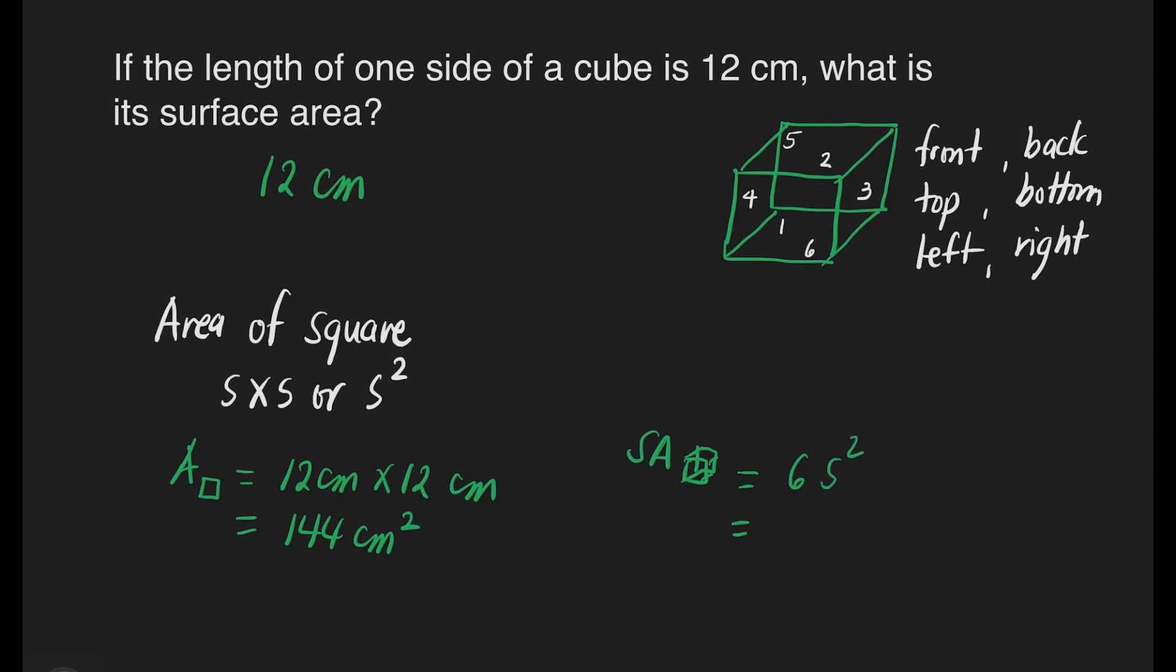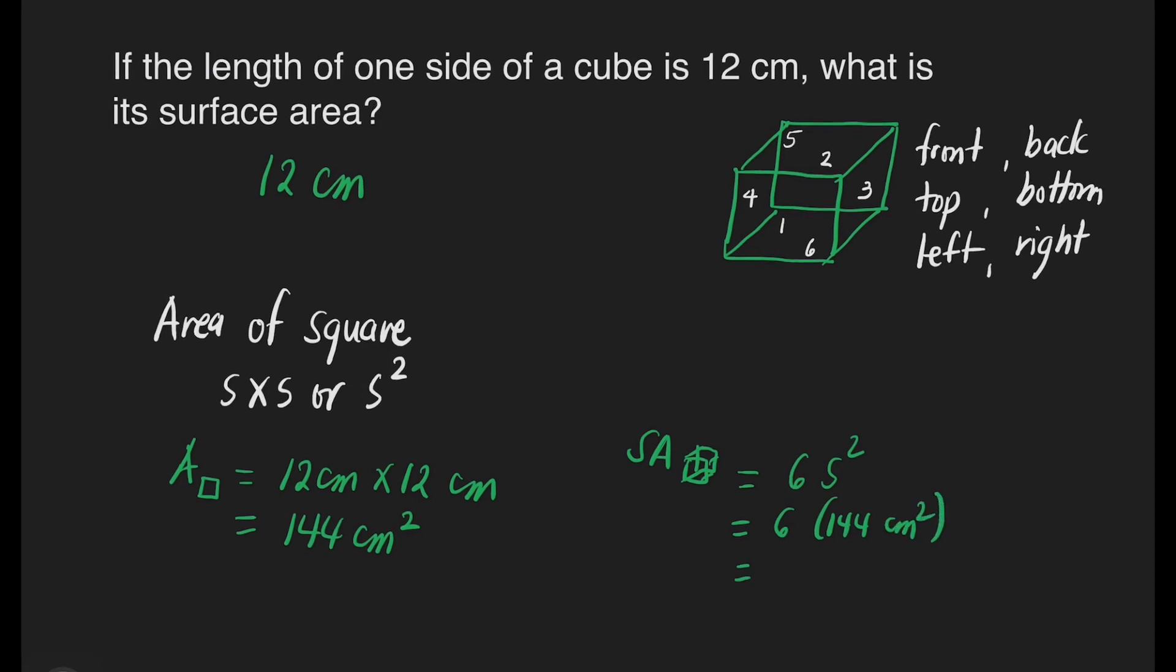Let's solve for the answer. That's 6. What's s squared here? It's already 144 centimeters squared. Let's multiply 144 times 6. 6 times 4 is 24. 6 times 4 is equal to 24. Plus 2 is 26. 6 times 1 is 6. Plus 2 is 8. So, we have 864 centimeters squared.